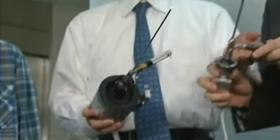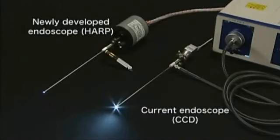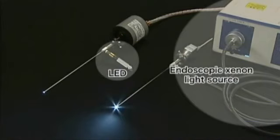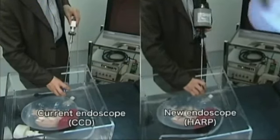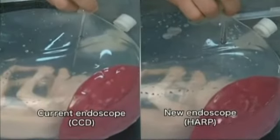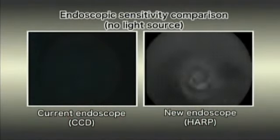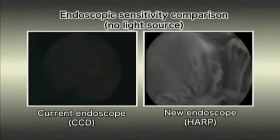Let's see how differently this new endoscope can perform using a model of the uterus with a fetus inside. The new endoscope and a current endoscope will be inserted into the uterus model, both without any particular light source and under room light. Hardly anything can be seen with the current endoscope, but the new endoscope can provide clear images of what's inside the uterus.